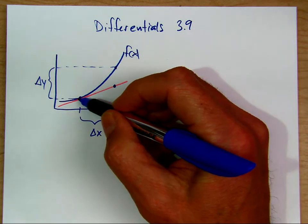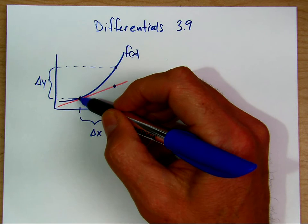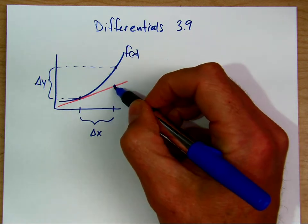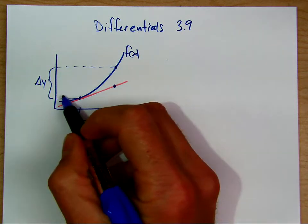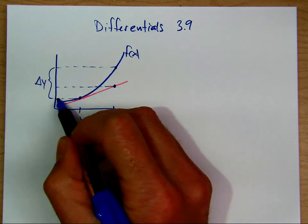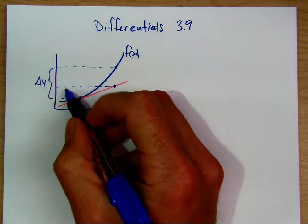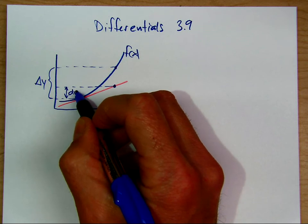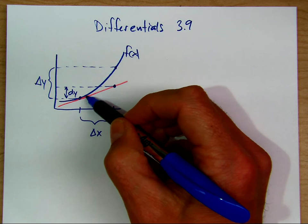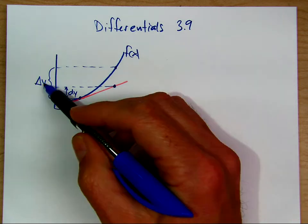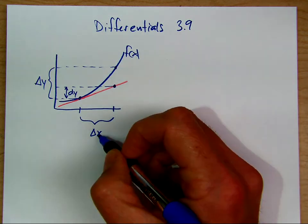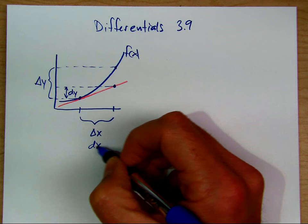We can talk about the change in y — here is delta y, which is how much the function changed. We can also talk about the change in the tangent line. That distance is the differential of y. So dy is the change in the y value of the tangent line, delta y is the change in the y value of the function, and delta x is the same as dx.